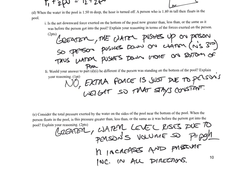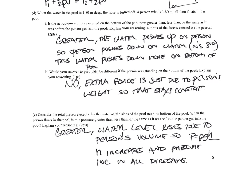When the water is in the pool 1.5 meters deep, a hose is turned off. A person who is 1.8 meters tall floats in the pool. Is the net downward force exerted on the bottom of the pool less than, greater than, or the same as before the person got in? So we're going to say it's greater. And that's the instance that this kind of comes down to Newton's third law.